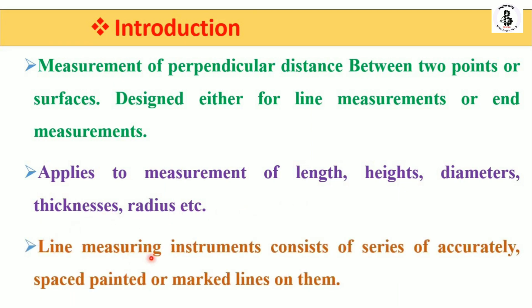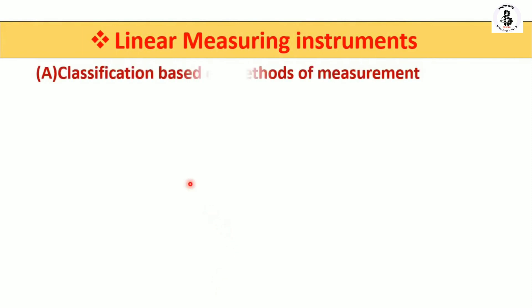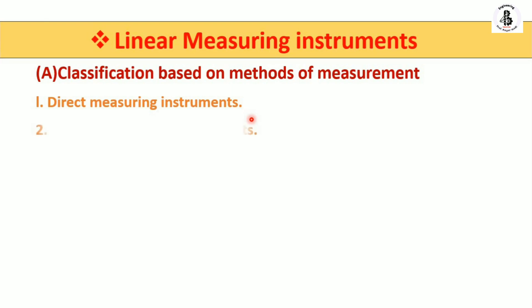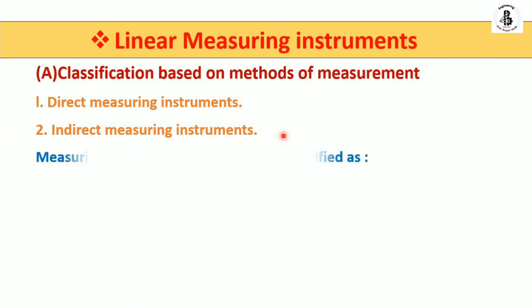In the case of line measuring instruments, they basically consist of a series of accurately spaced pointed or marked lines — or in simple terms, graduations — marked onto the instruments. The classification of linear measuring instruments is based on the methods of measurement. First, direct measuring instruments: with the help of the instrument and object, you take a direct reading because all graduations are marked onto the instrument. Second, indirect measuring instruments: in that case, relative measurements are taken.